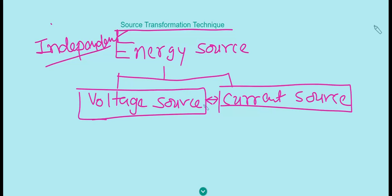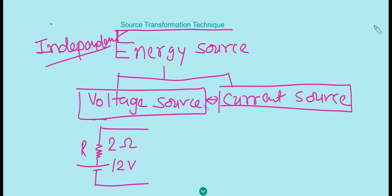First of all we will understand about the voltage source. An ideal voltage source does not have any internal resistance, because if the voltage source is 12 volts it should supply 12 volts only, with no further voltage drop, and the load should get a constant 12 volt supply. So an ideal voltage source has zero internal resistance. But practically it has some resistance — for example, a 2-ohm resistance for a 12-volt battery. In the case of a voltage source, we always show resistance in series with the voltage source.